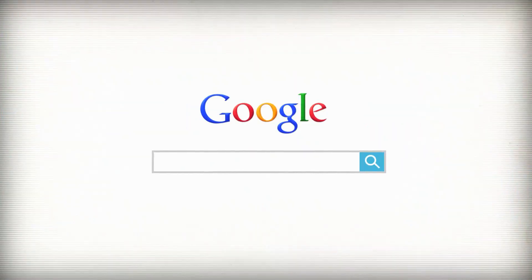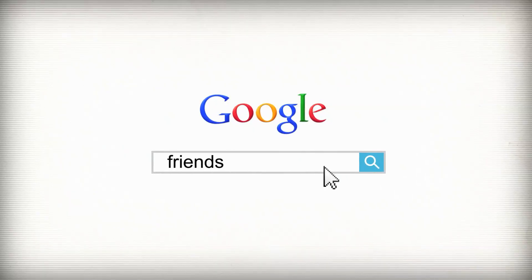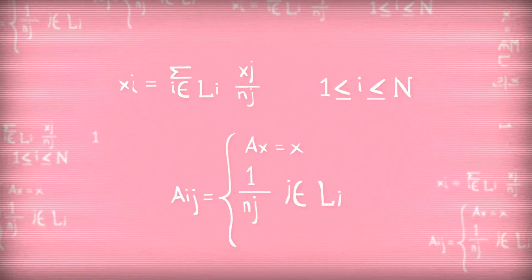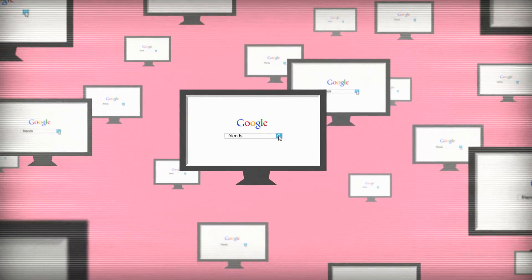An example of how network structure emerges is the algorithm used by Google. As the number of links around a search term, say friends, increases, connections begin to form among millions of different searches using the term friend. What Google has cleverly accomplished is a real-time mathematical model for how to predict the emergence of growing connections among billions of search terms.